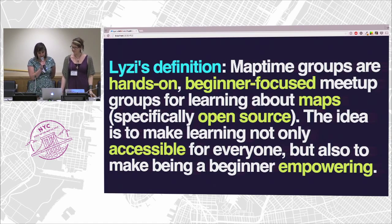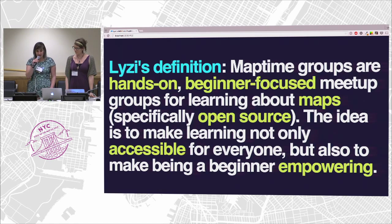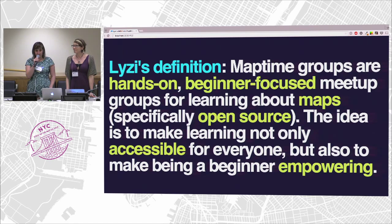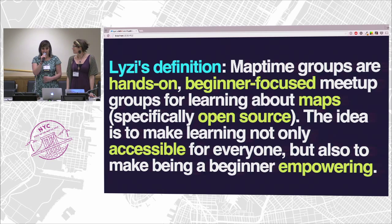My definition: MapTime groups are hands-on, beginner-focused meetup groups for learning about maps, specifically open source. The idea is to make learning not only accessible for everyone, but also to make being a beginner empowering. This is your first conference for many of you — we had new attendee banners and a first-time attendee happy hour. The idea was to celebrate coming into this community as a new person and not making that a scary thing, but making it an awesome thing, because it is awesome.